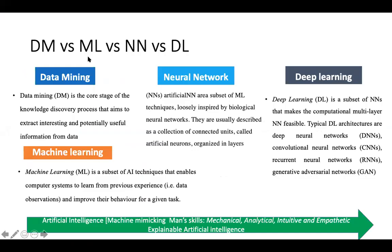Going back to the very beginning slides — initially people felt data mining was great, predominantly covering business applications using machine learning algorithms internally. Then we got a separate discipline called machine learning, a subset of AI techniques. Later the field moved toward neural networks. Artificial neural network is a subset of ML techniques loosely inspired by biological neural networks. They are described as a collection of connected units called artificial neurons organized in layers.